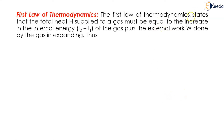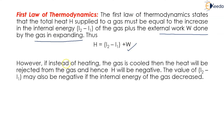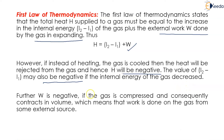The first law of thermodynamics states that the total heat H supplied to a gas must be equal to the increase in internal energy (i₂ − i₁) of the gas plus the external work W done by the gas in expanding. Thus H = (i₂ − i₁) + W. If instead of heating, the gas is cooled, then heat is rejected and H becomes negative. The value of (i₂ − i₁) will also be negative if the internal energy decreases. Further, W is negative if the gas is compressed and contracts in volume, meaning work is done on the gas from an external source. This is Equation 3.